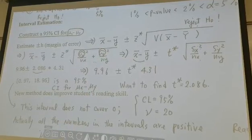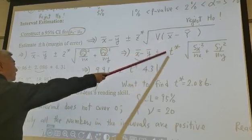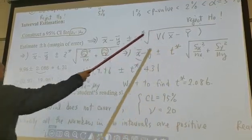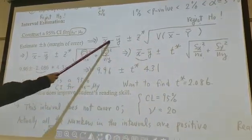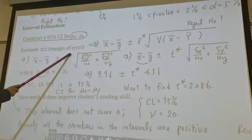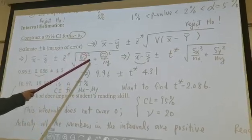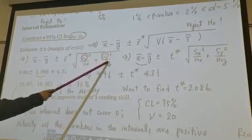So what's variance of x̄ minus ȳ? Let's move from here to here. x̄ minus ȳ plus or minus z-star. Variance of x̄ minus ȳ is σx² over nx plus σy² over ny.